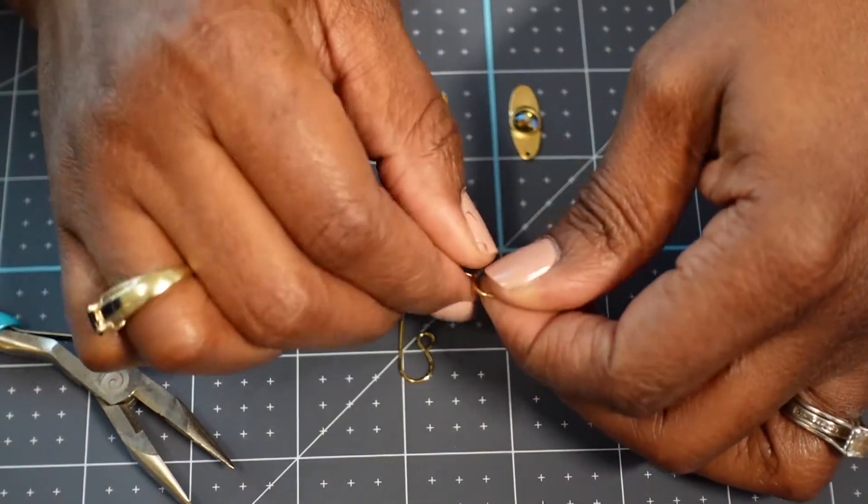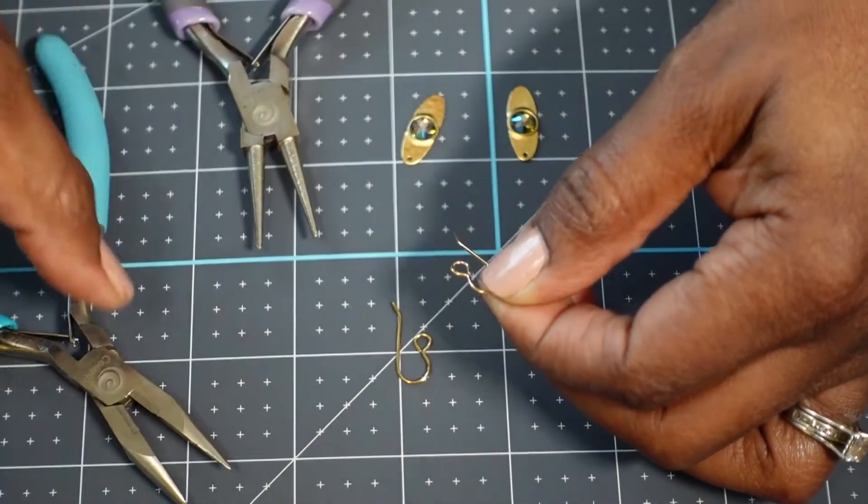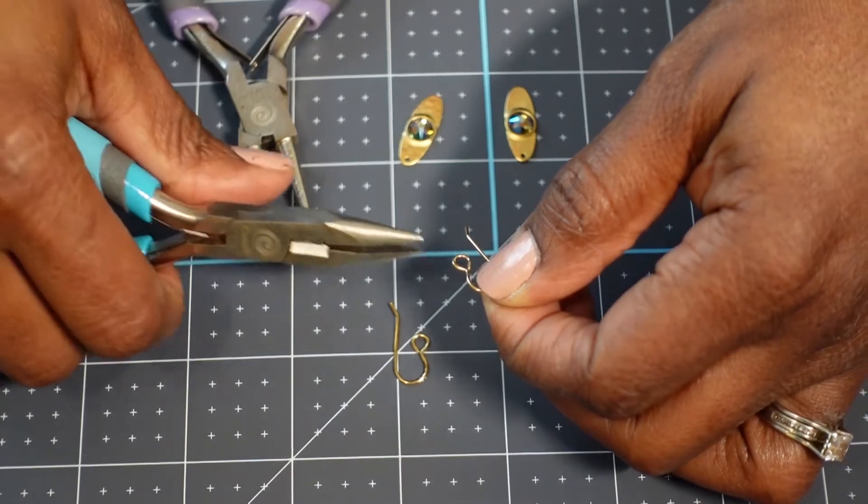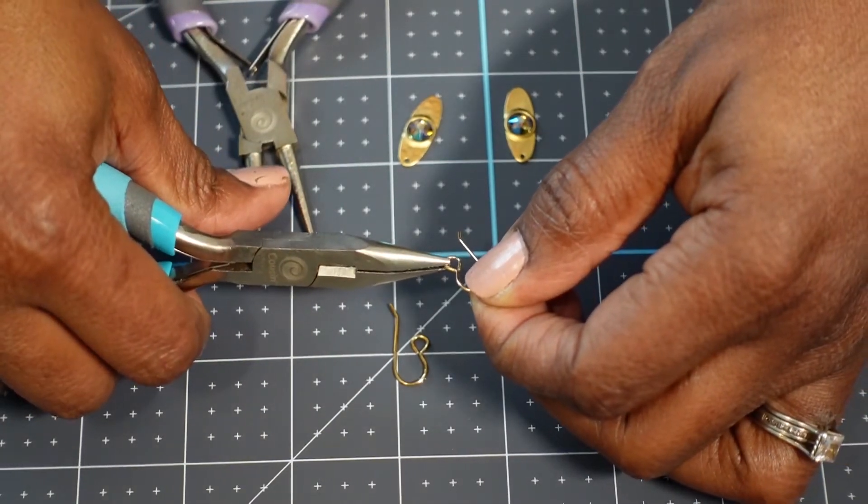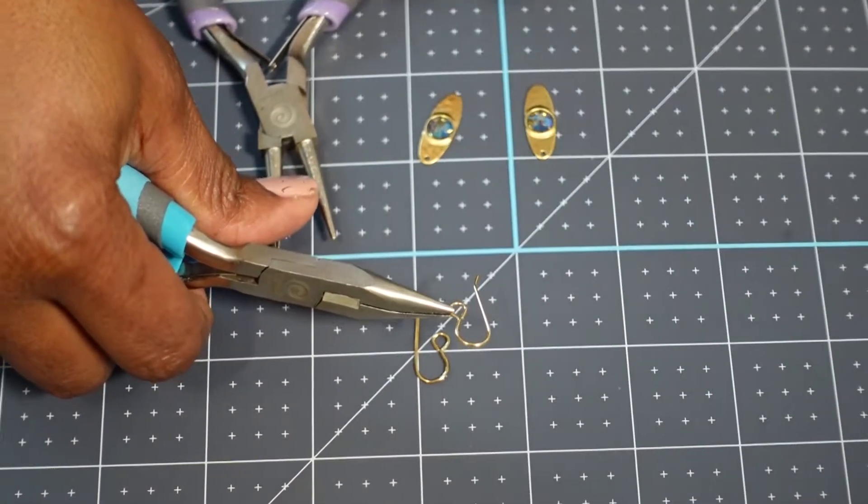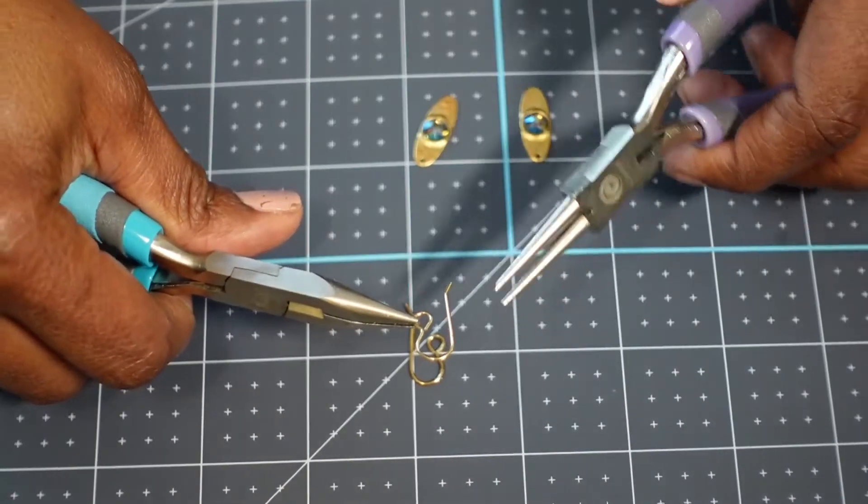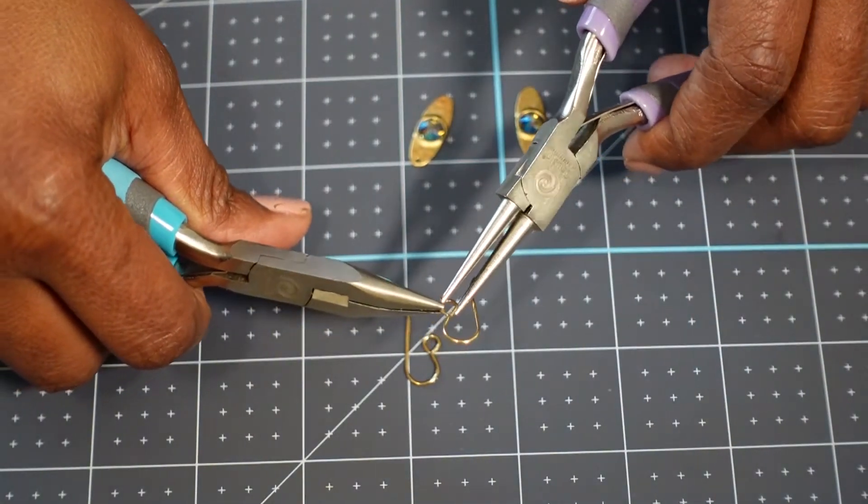So I'm going to turn this so hopefully you can see. And I'm going to grab one side with the flat nose pliers. And I'm going to take the round nose pliers.